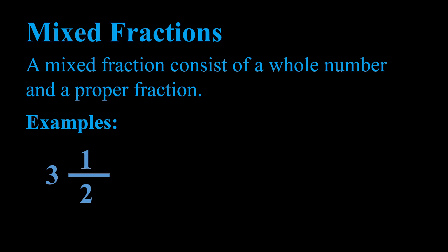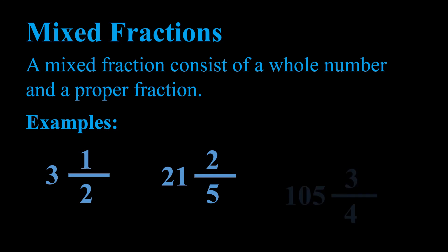Another example is 21 and two fifths — the 21 is our whole number and the two fifths is the proper fraction. Our final example is 105 and three quarters. The 105 represents our whole number and the three quarters represents our proper fraction. A mixed fraction always consists of a whole number and a proper fraction.